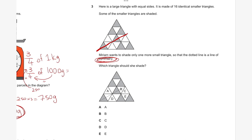Comparing both sides: these sides are exactly the same, these sides are exactly the same, these are all exactly the same. Looking at these triangles — these ones are the same, these ones are the same, but these two are different. That means we need to shade this triangle here for it to look exactly the same. Choosing from answer options A, B, C, D, E — the triangle that needs to be shaded is C. So the answer to question three is C.